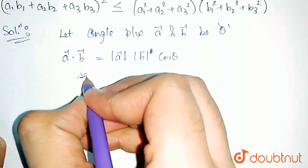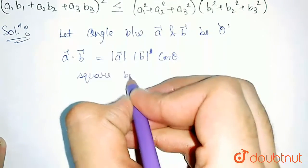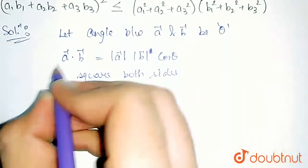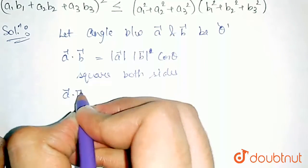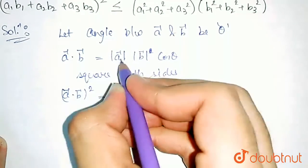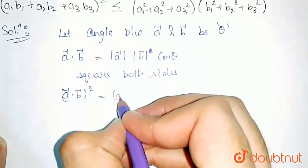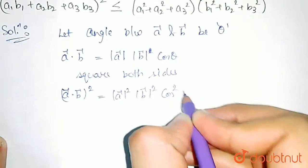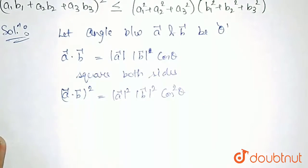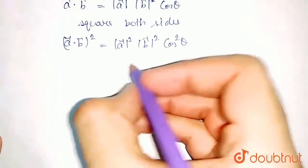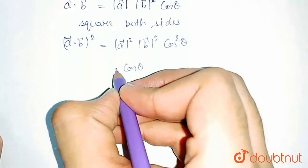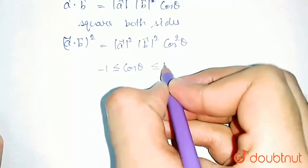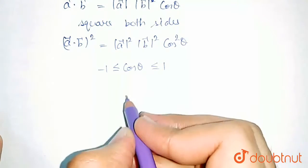Now, we square both sides. Squaring both sides, we will get A dot B whole square is equal to mod A squared into mod B squared into cos squared theta. Now, we all know that cos theta is always greater than or equal to minus 1 but less than or equal to 1. This is the range for cos theta.